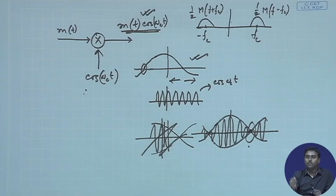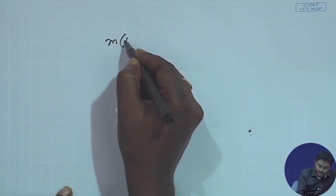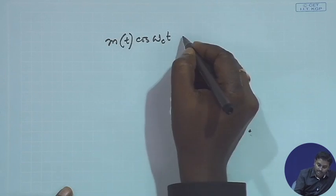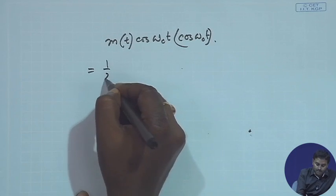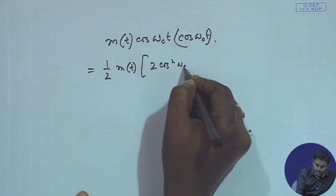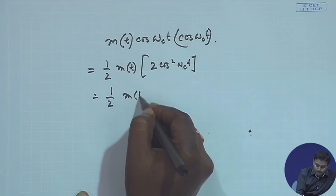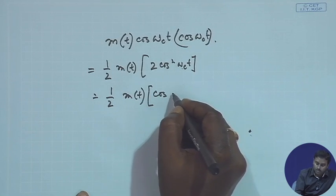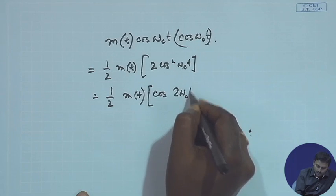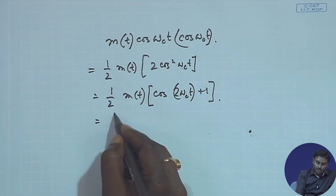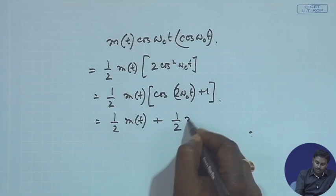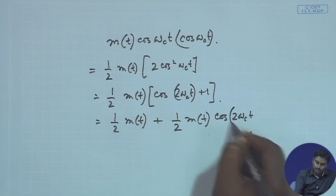For demodulation, we receive m(t)·cos(ωc·t) and must recover m(t). The operation is simple: multiply by another locally generated cos(ωc·t). This gives half·m(t) times 2cos²(ωc·t), which can be written as half·m(t) plus half·m(t)·cos(2ωc·t).